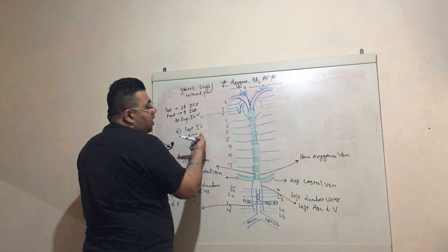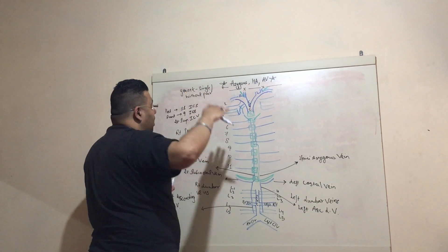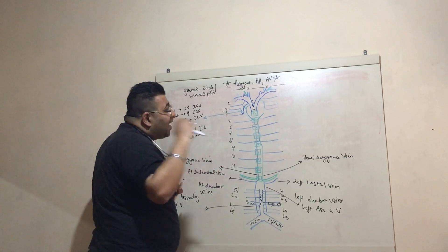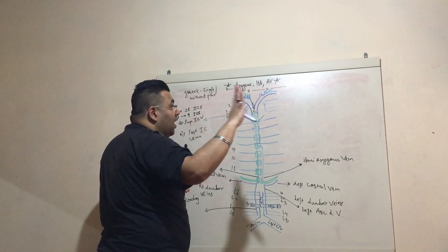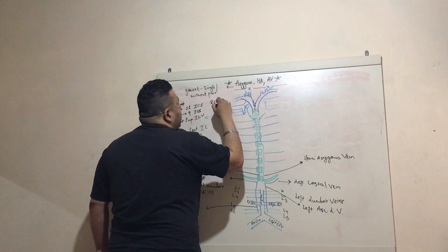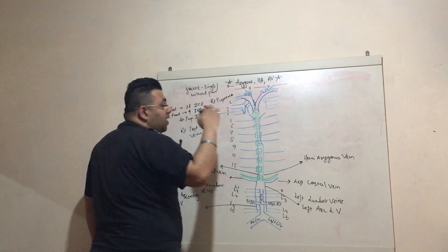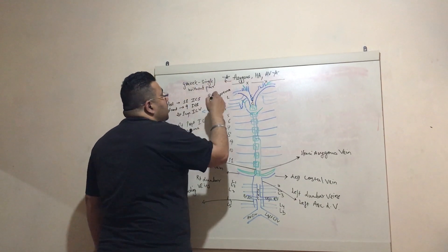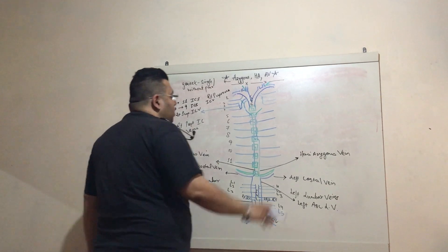The right superior intercostal vein drains the 2nd, 3rd, and 4th right posterior intercostal veins. The most superior right posterior intercostal vein — the 1st — drains directly into the brachiocephalic vein. This is known as the right suprema intercostal vein, 'suprema' meaning above superior.